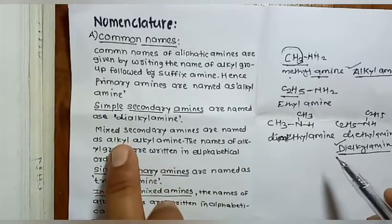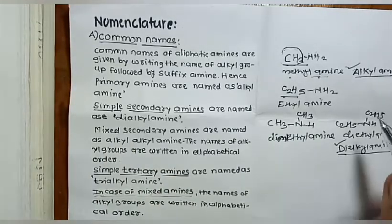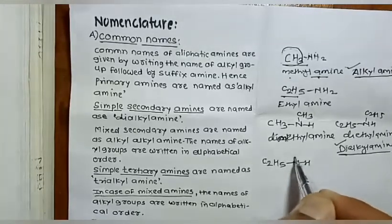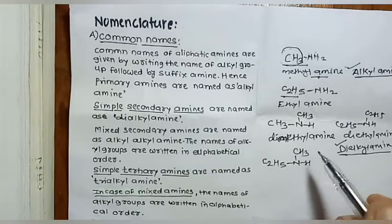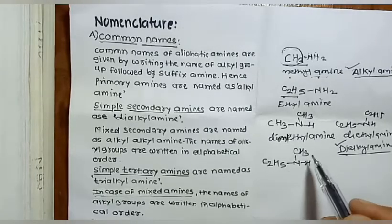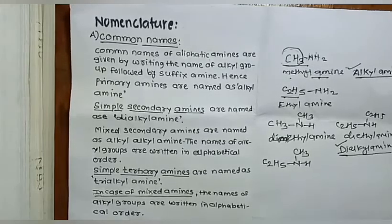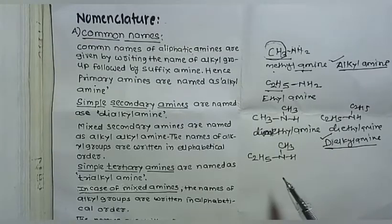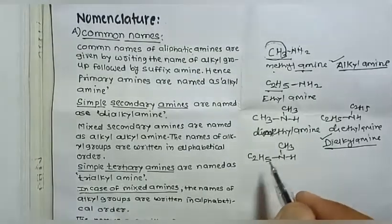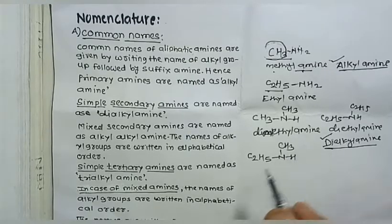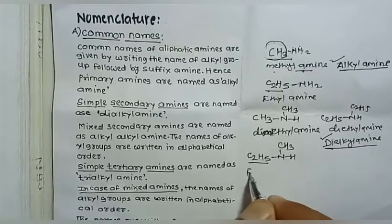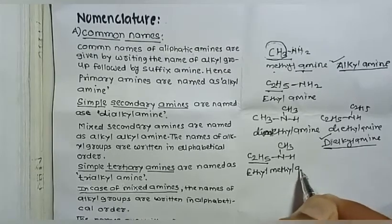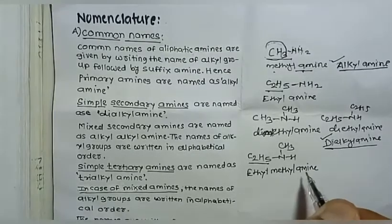If there is a mixed secondary amine — for example C₂H₅NHCH₃ — the two alkyl groups are different: one is ethyl and one is methyl. This is an example of a mixed or unsymmetrical amine. In such cases, the names of the alkyl groups are written in alphabetical order. Since 'E' of ethyl comes before 'M' of methyl, the name is 'ethylmethylamine'.